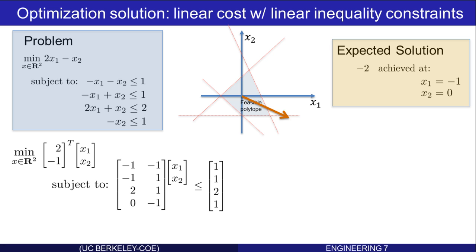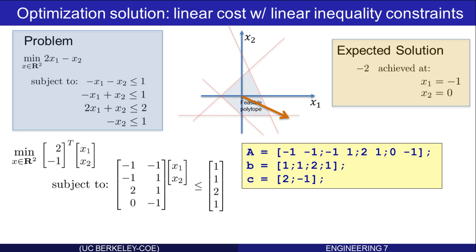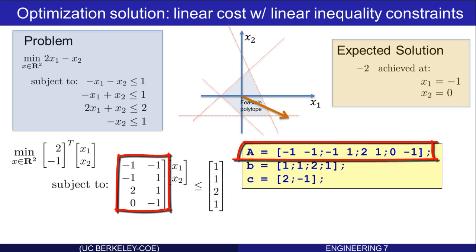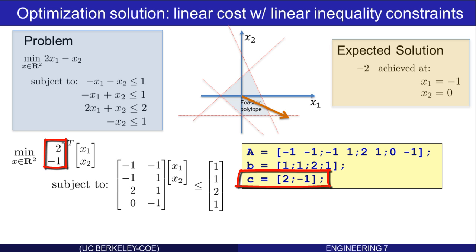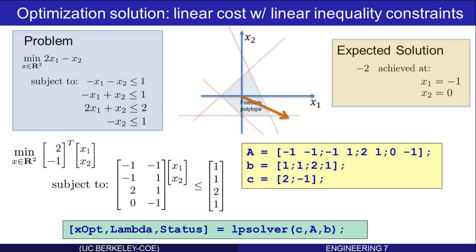How will we use the software? Let's define the A array: negative 1, negative 1, negative 1, 1, 2, 1, 0, negative 1. The B column vector: 1, 1, 2, 1. And the C column vector: 2, negative 1. At that point, it should simply involve a call to LPSolver with the input arguments C, A, B.